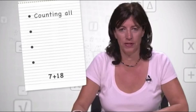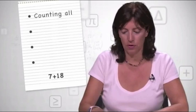The strategies were: some students counted all. So with 7 plus 18 they would say 1, 2, 3, 4, 5, 6, 7, then 1, 2, 3, 4, 5 and count up to 18, and then to add them they would count them all again—1, 2, 3, 4, 5, 6, 7, 8, 9, 10 and go on like that.